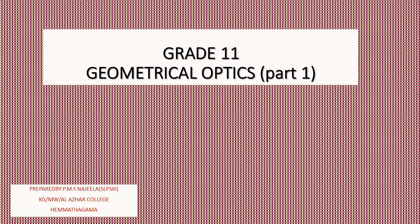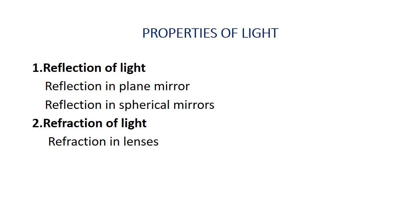Assalamu alaikum dear students. Today let us learn about geometrical optics. In this lesson we have to discuss two important properties of light: reflection of light and refraction of light. In reflection of light we have to learn about the reflection in plane mirrors and also reflection in spherical mirrors — curved mirrors such as concave mirror and convex mirror. In refraction of light, we have to consider the refraction in lenses.